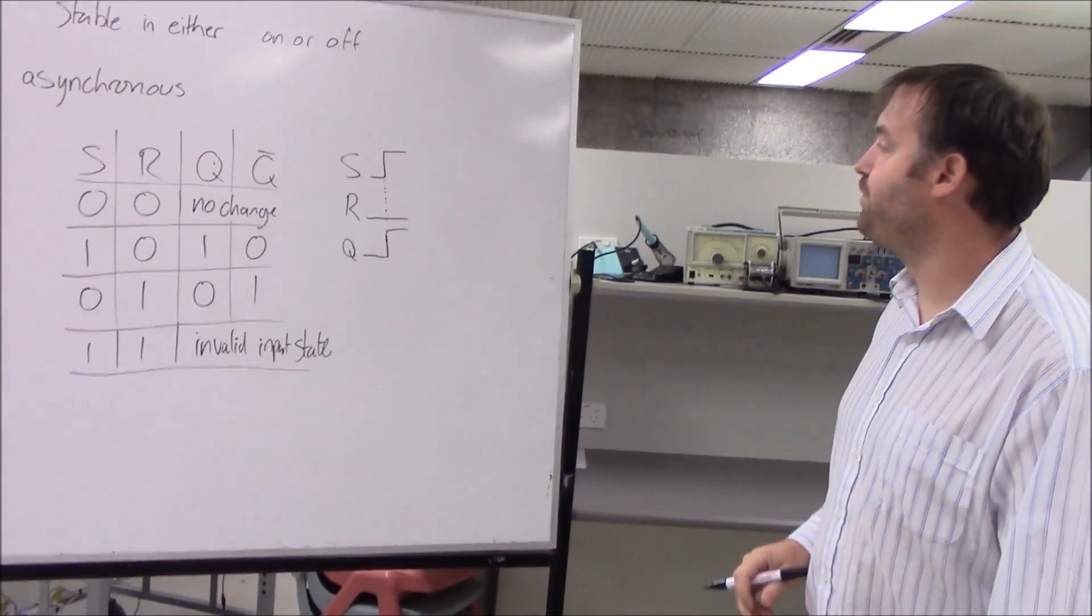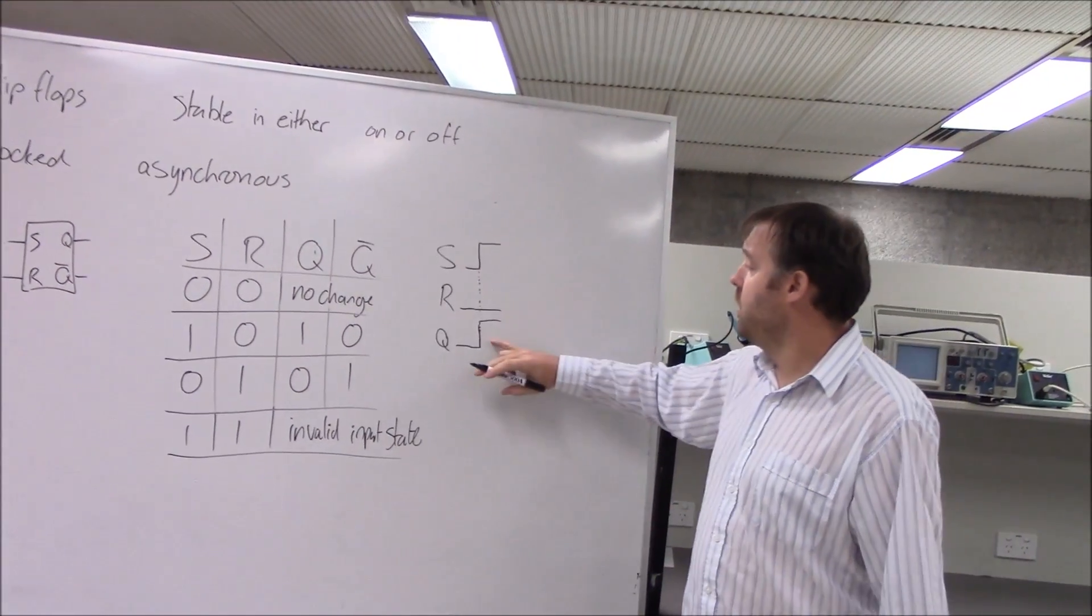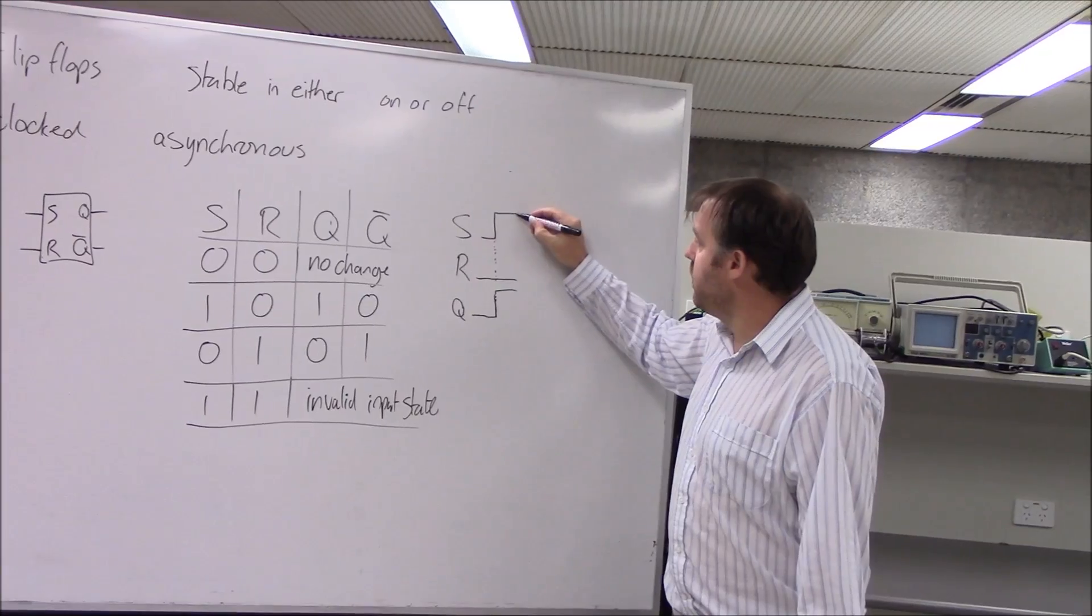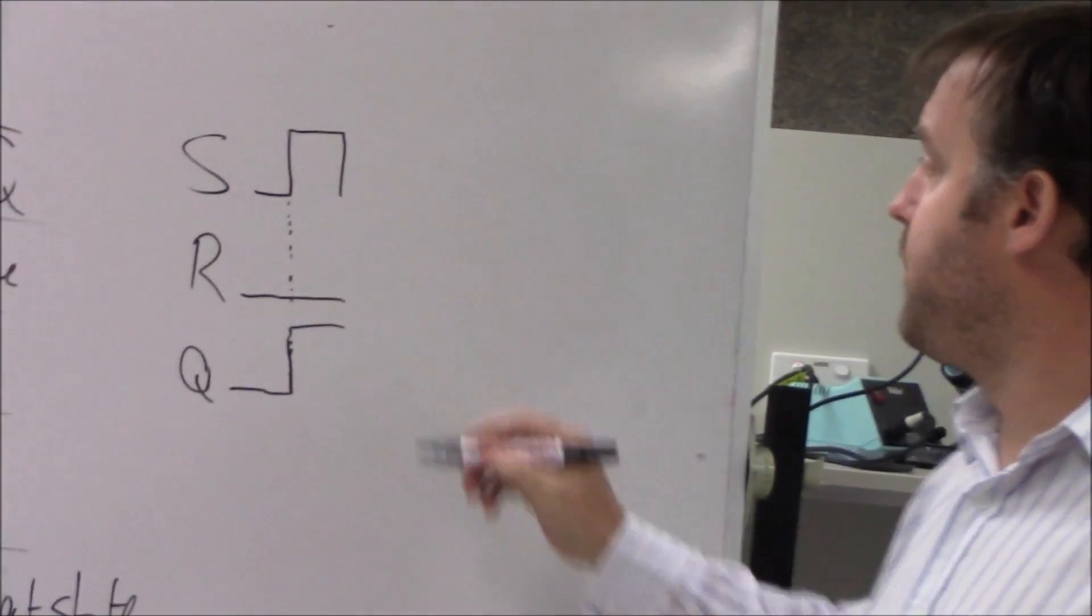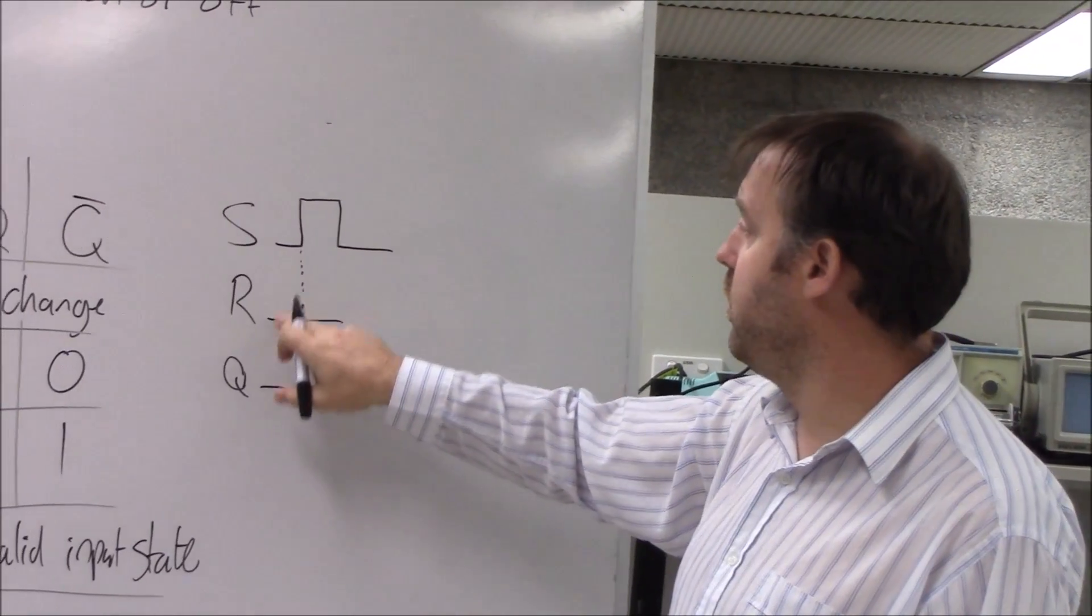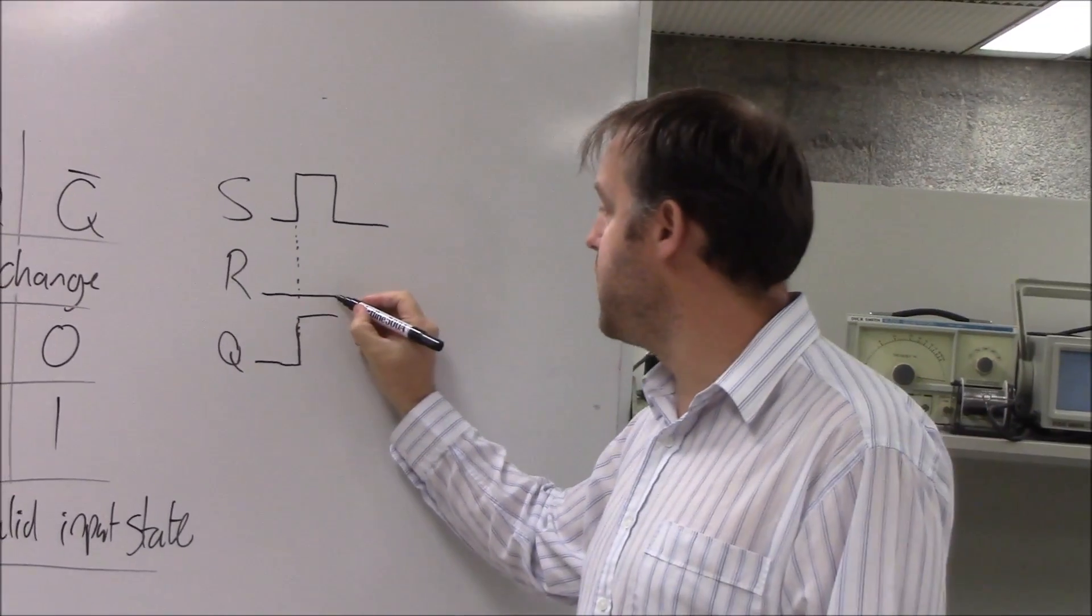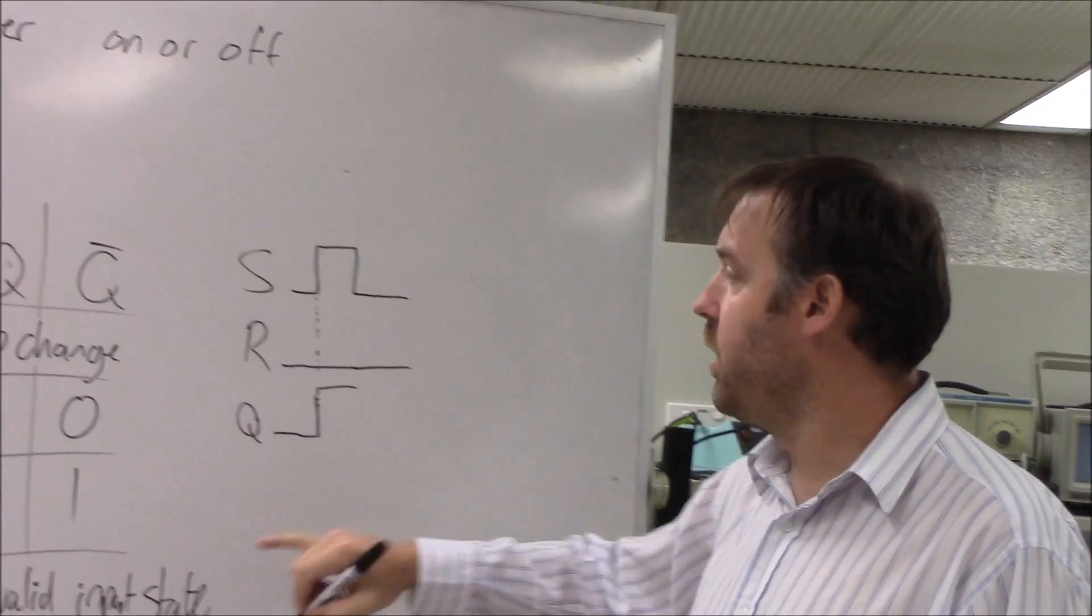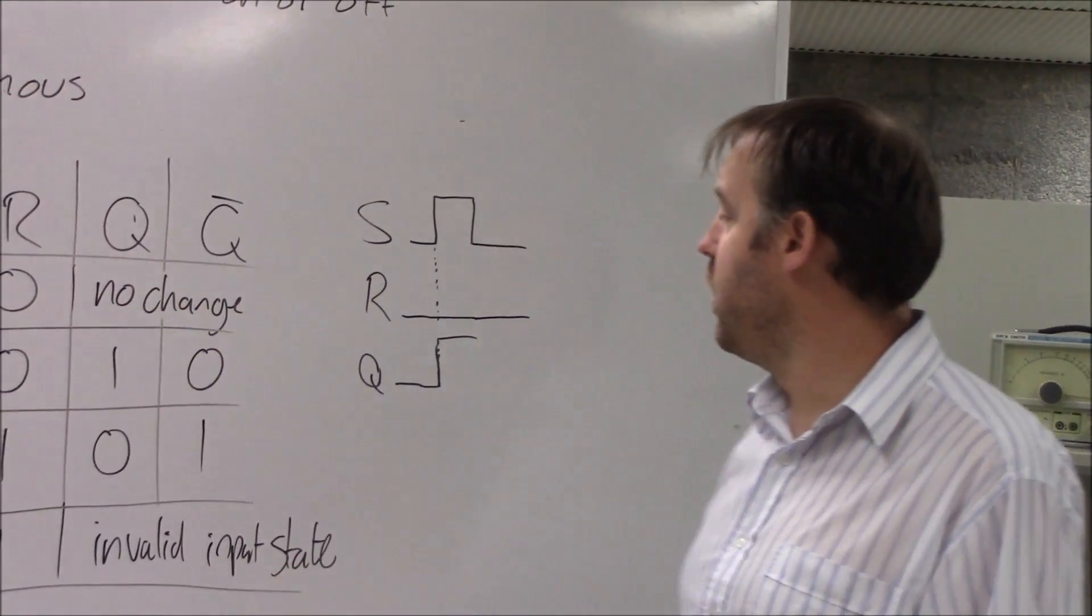If set goes back to low again, we're back to here, low, low. The set and reset are both low. Remember the set and reset both being low, we get no change. So the output doesn't change.